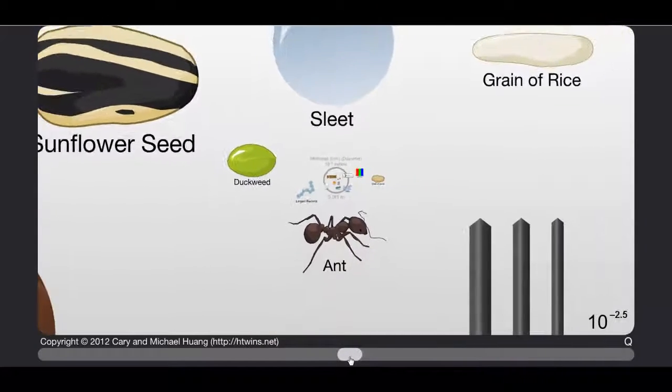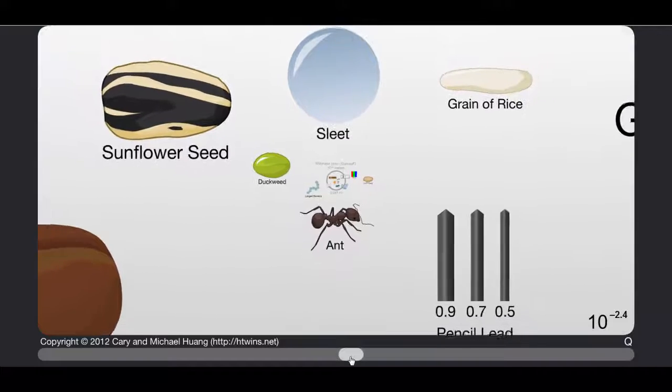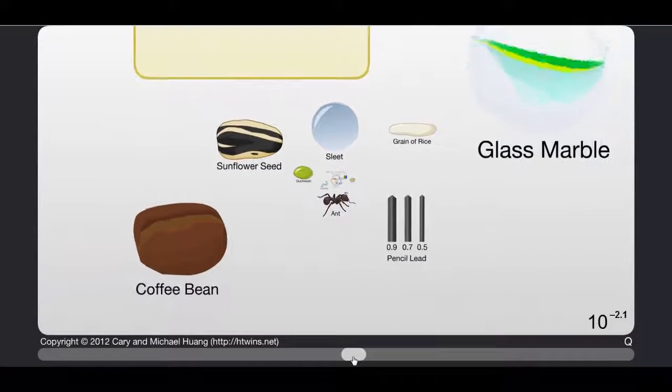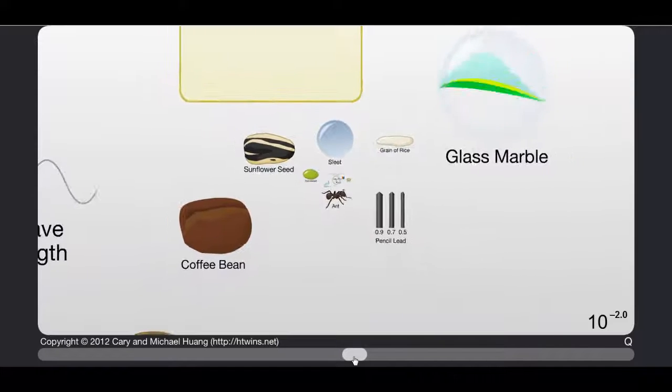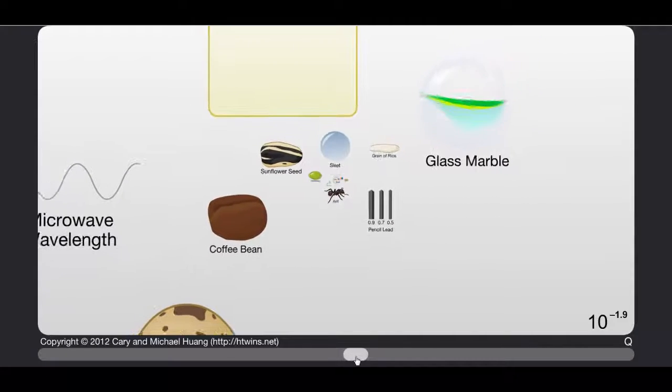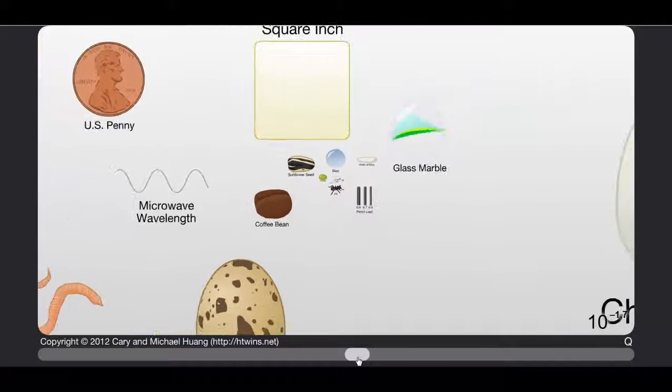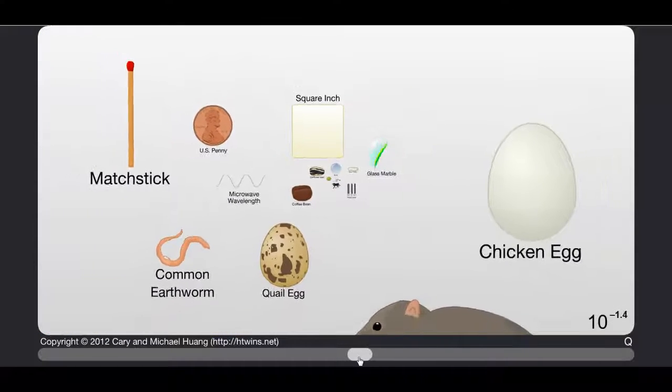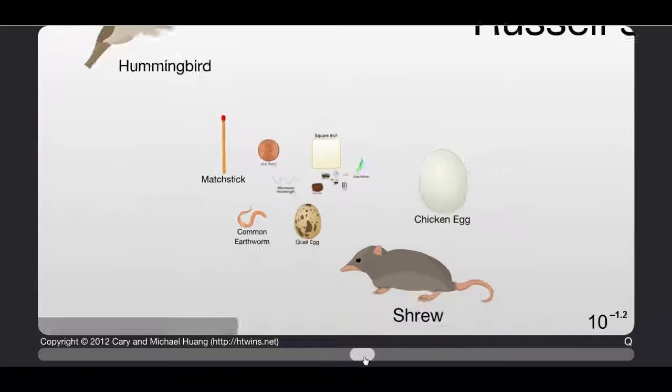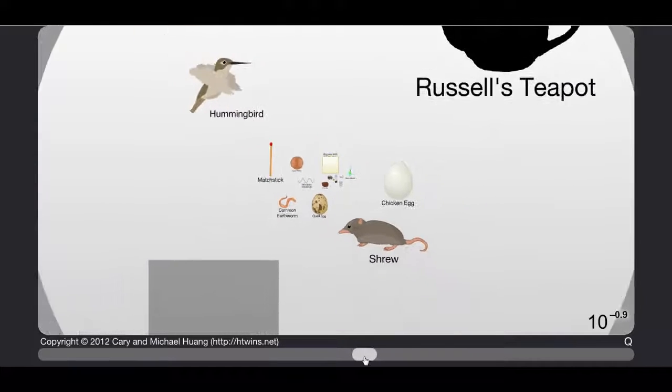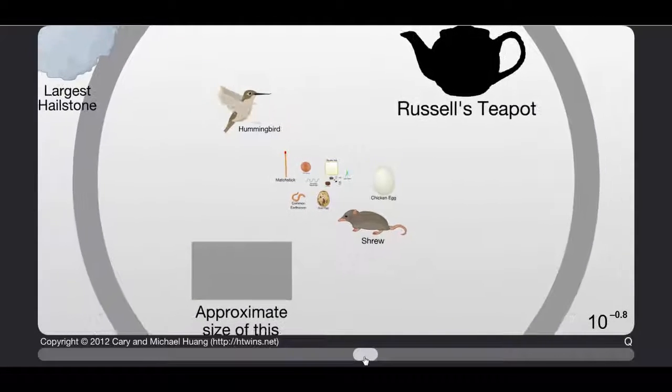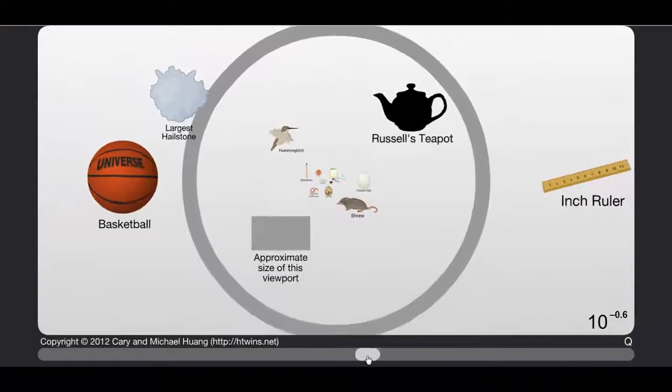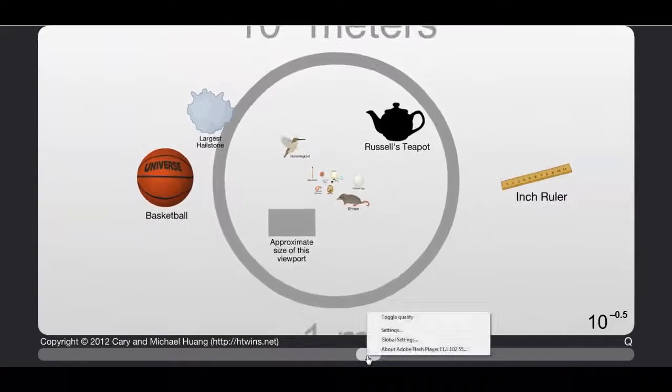A grain of rice, we're getting pretty big now. This thing is exponential. A glass marble. Coming into the... oh penny. An earthworm, a matchstick, an egg, a mouse or a shrew. A teapot. Approximate size of this viewport. That's pretty cool, like little things like this. That would all depend on the size of your screen of course.